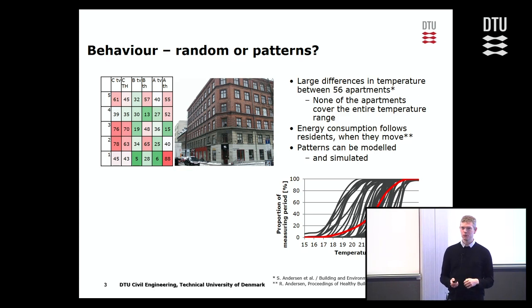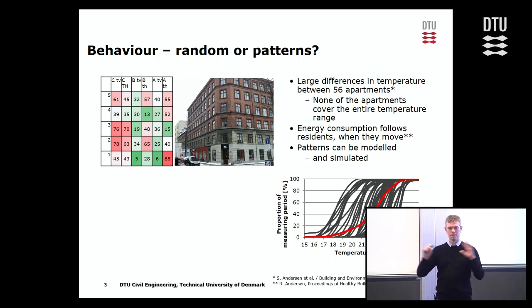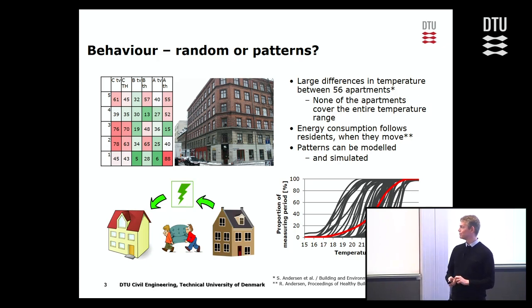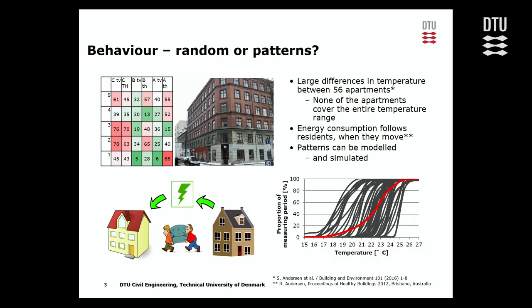In some cases we saw big changes - in two cases they went from the very top to the very bottom, changing 35 places in the ranking. What happened in those cases was that the tenants changed. Every time that happened we had a big change in the ranking. There were some physical differences in the apartments - they weren't the same size, they had different facade areas - so I wouldn't expect a complete change in ranking, but that's nonetheless what happened.